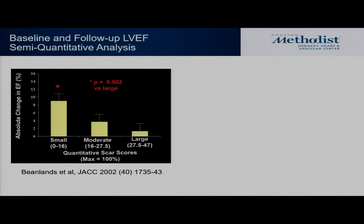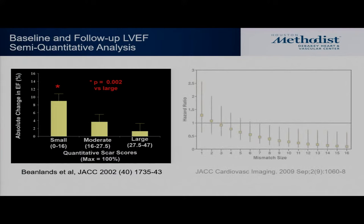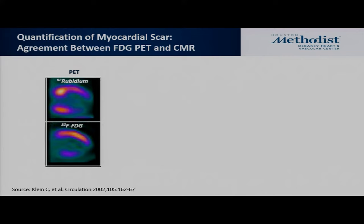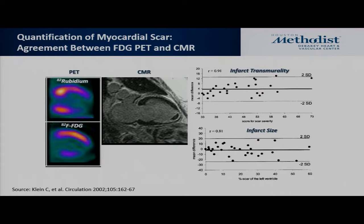You need small scar burden, but at the same time you need a lot of jeopardized myocardium. The sweet spot has been around 7% to 8% — you need to have at least 8% of the LV jeopardized as well as small scar burden. How does it correlate with MRI? There is good data showing good correlation. In terms of infarct transmurality and infarct size, it has been validated that there is good correlation between the two modalities. New PET-MRI tools are combining them to study different phenotypes.